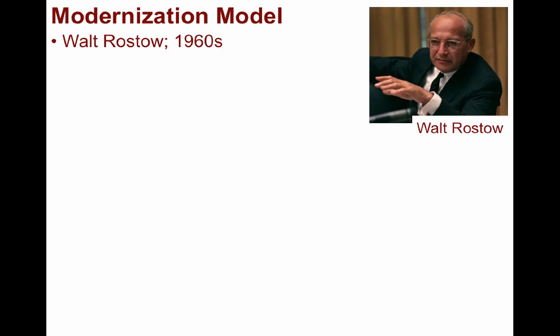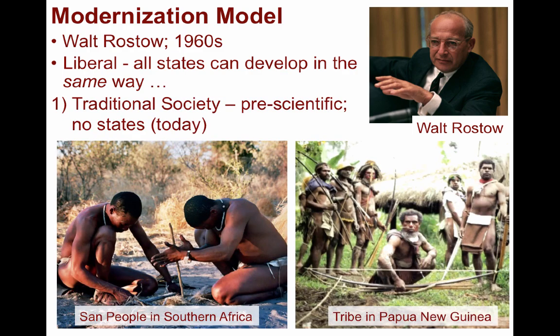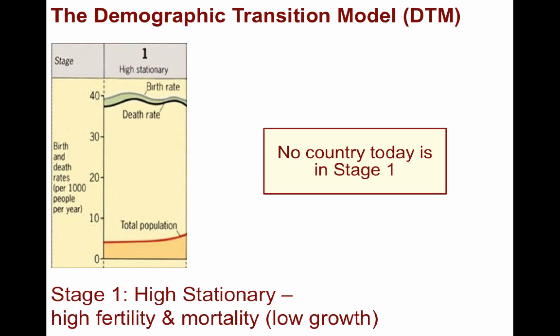The first model we'll investigate is the Modernization Model, also known as the Stages of Growth or Lateral Development. This is the classic development model created by Walt Rostow in the 1960s. It's a liberal model suggesting each country is able to develop in the same way, much like all human beings follow the same path of maturation from infancy through adulthood. These models suggest that economic disparities are the result of short-term inefficiencies in local or regional markets. Rostow claimed countries develop through five stages, the first being the traditional society, where the dominant activity is subsistence farming, the social structure is rigid and unchanging, and there is much resistance to technological change. No existing country is in this stage, though some regions within peripheral states are at this level.